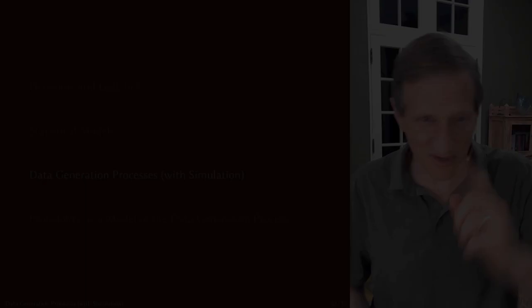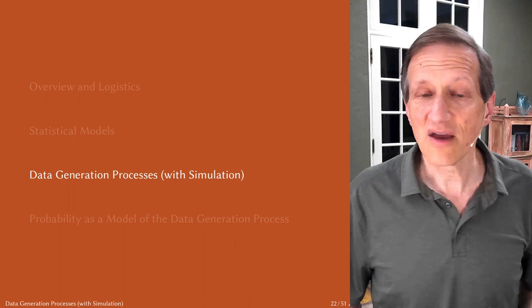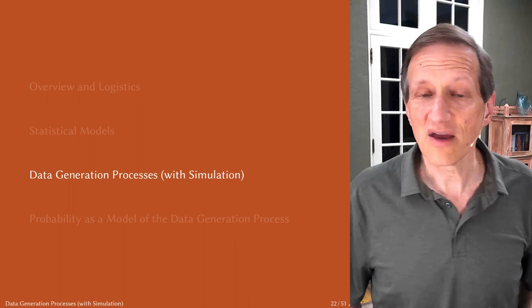Now what we're going to do is focus on the thing that the statistical model is modeling, which is the data generation process. The data generation process is really the key to the whole thing. So this is our outline: we've done overview and logistics, statistical models, and now we're going to do data generation processes. Afterwards comes probability, and then we'll get to the details of modeling.